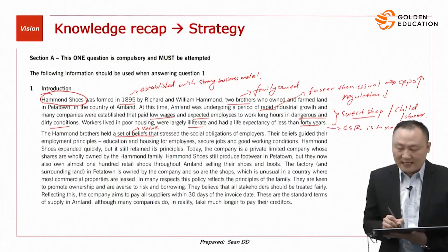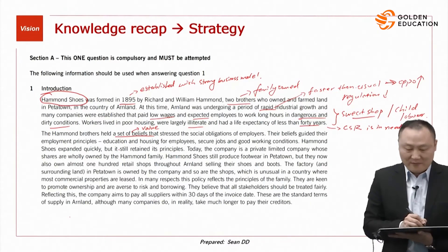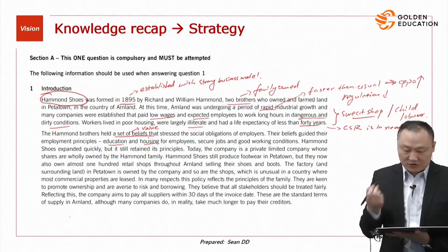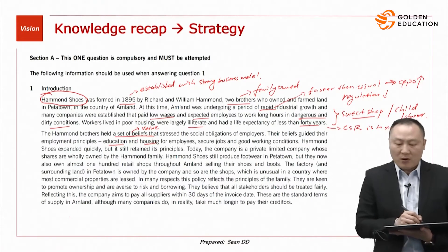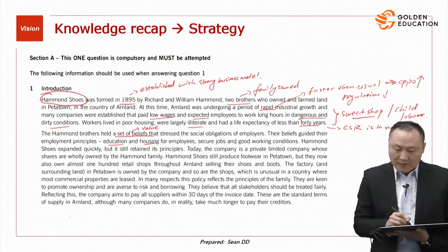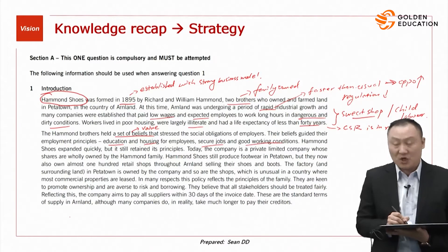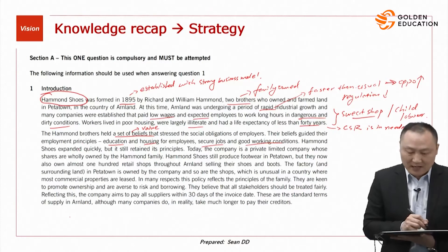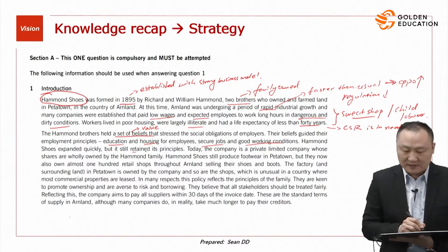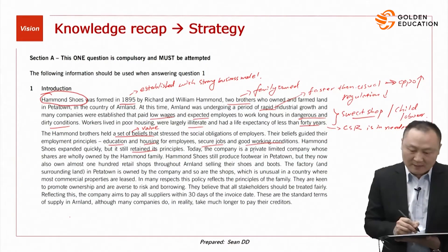The Harman brothers held a set of beliefs — 'beliefs' is the keyword for 'value' when reading the case. These beliefs stressed the social obligation of employers and guided their employment principles: housing allocation for employees, treating employees well with benefits, secure jobs, and good working conditions. Harman Shoes expanded quickly, but still retained its principles — meaning the core value never changed.